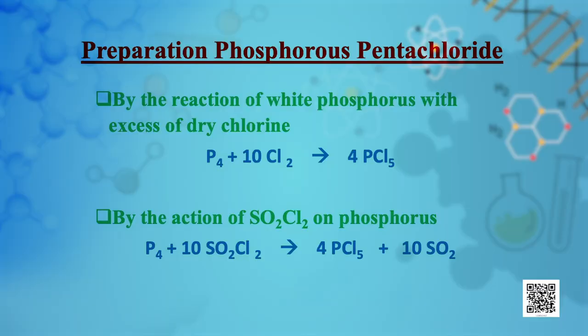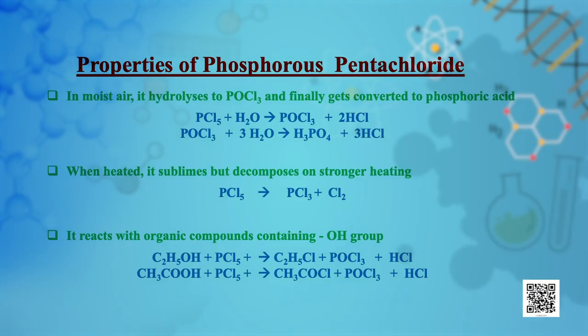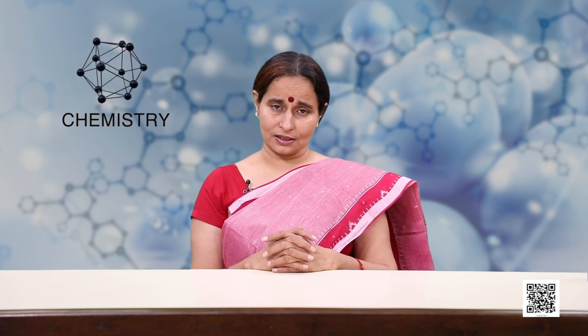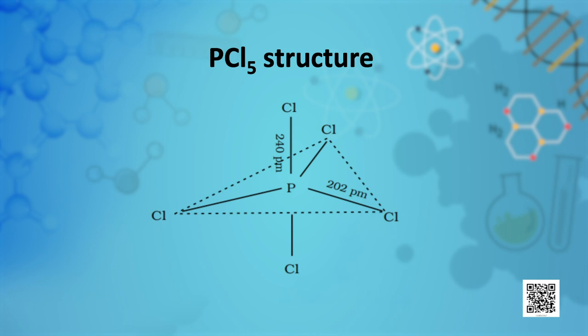Phosphorus pentachloride (PCl5) can be prepared by the reaction of white phosphorus with excess dry chlorine, or by the action of SO2Cl2 on phosphorus. It is a yellowish-white powder; in moist air it hydrolyzes to POCl3, and finally gets converted to phosphoric acid. When heated it sublimes, but decomposes on stronger heating. Like PCl3, it also reacts with organic compounds containing hydroxyl groups. Are all 5 bonds in PCl5 equivalent? No — PCl5 has a trigonal bipyramidal structure; the 3 equatorial P–Cl bonds are equivalent, while the 2 axial bonds are different and longer than the equatorial bonds.